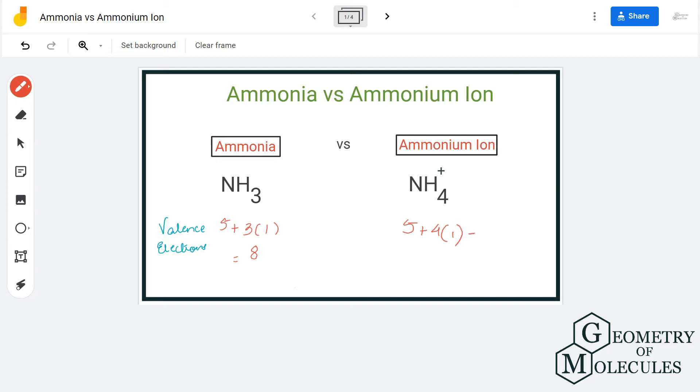it has a plus charge, that means it is giving away one electron to gain this positive charge. So here for NH4+, we also have eight valence electrons. So even though the valence electrons are the same for NH3 and